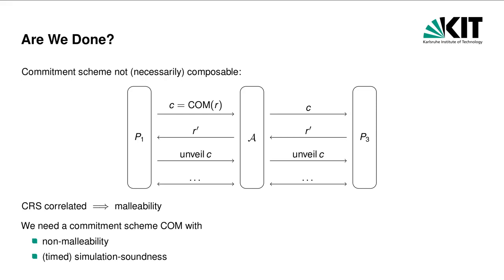Unfortunately, we are not done yet, because our commitment scheme may not be composable. Consider the following man-in-the-middle adversary taking part in two instances of our commitment scheme. In the first instance, the committer is honest and the adversary plays the receiver. In the second instance, it plays the committer while the receiver is honest. The adversary can relay messages between the instances — taking the first commitment sent by P1 for the first coin toss and using it as its own commitment in the execution with P3, and so on throughout the whole protocol. Using this strategy, the CRS will be the same in both instances, leading to a malleable commitment. In order to prevent this attack, we need a commitment scheme for the coin tosses that is non-malleable, even if the adversary receives equivocated commitments. This property is called simulation soundness. In our setting, we only require simulation soundness to hold for adversaries that cannot break the timed commitment scheme in time, so we consider timed simulation soundness only.